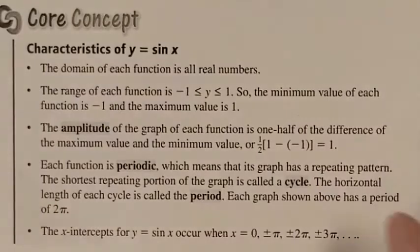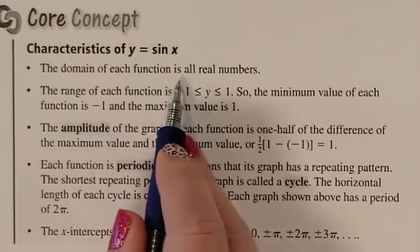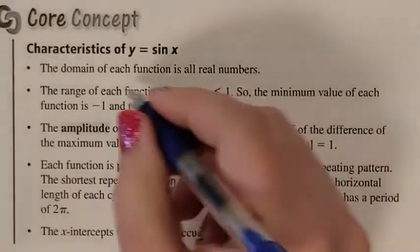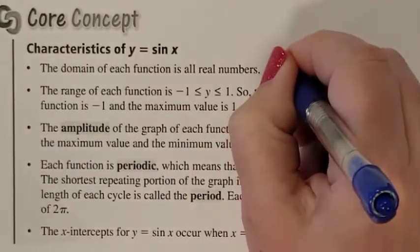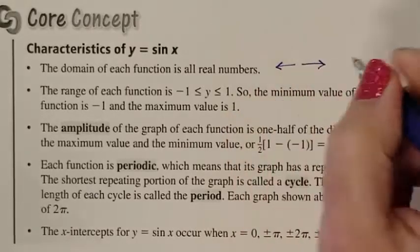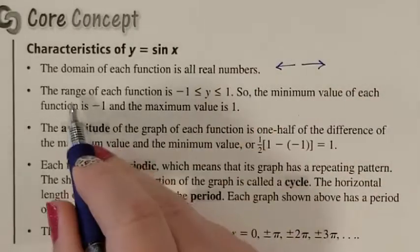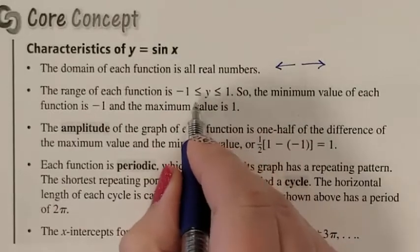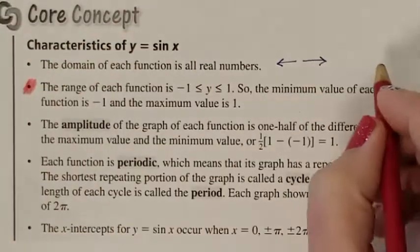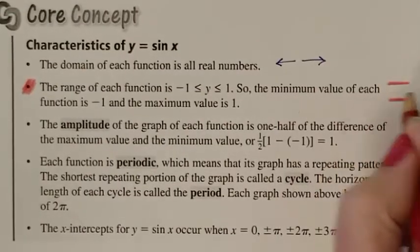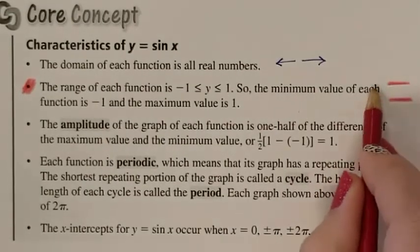And then we have a list of characteristics that we just read over. Your domain. Domain is how far to the left and how far to the right this goes. We said that it goes without bounds. So it goes forever to the left and forever to the right, oscillating between a range of negative one and one. That's what we highlighted above in red. It bounces between negative one and one the entire time.